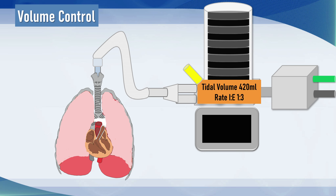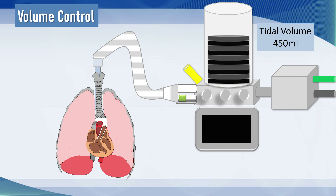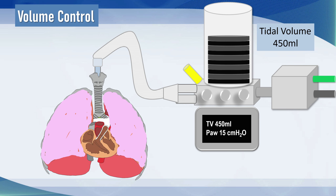In this case, we've decided to give a tidal volume of 420 mils, a rate of 12 to 15 breaths per minute with an I2E ratio of 1:3. The ventilator delivers that breath into the patient, causing the lungs to expand. You will notice that the tidal volume measured on the screen is the same as what we dialed up on the settings, and that tidal volume should always be the same because it's volume control ventilation and you're targeting that tidal volume.